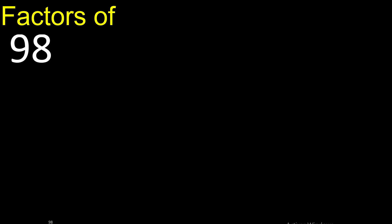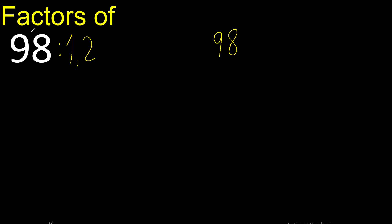Factors of 98. Always start with 1. 98 divided by 1 is 98. Next is 2. 98 divided by 2 is 49.